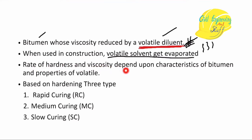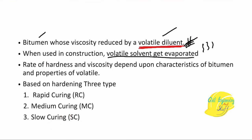The rate of hardening and viscosity depends upon the characteristics of the bitumen and the properties of the volatile diluent. Based upon the hardening, we have three kinds of cutback bitumen: rapid curing bitumen, medium curing bitumen, and slow curing bitumen. Rapid curing evaporates almost immediately upon application, slow curing takes a certain amount of time, and medium curing is in between.